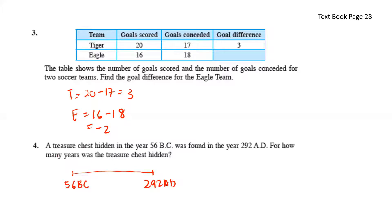A treasure chest hidden in the year 56 B.C. was found in the year 1292 AD. For how many years was the treasure chest hidden? B.C. will symbolize negative while AD symbolizes positive. To calculate the years in between, we'll use the bigger number minus the smaller number, and this will give us 292 plus 56, which gives us 348 years.